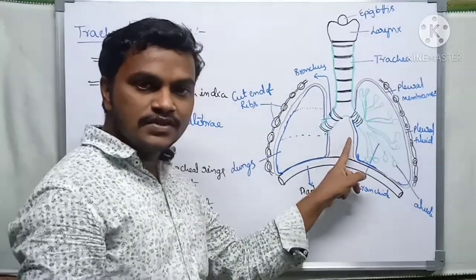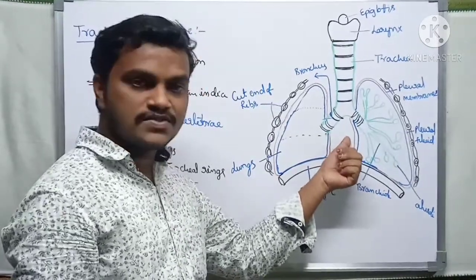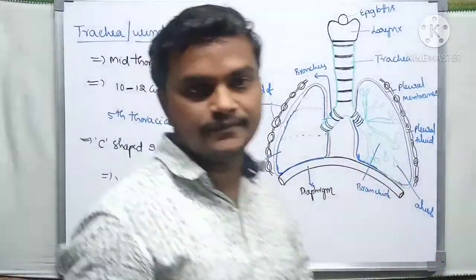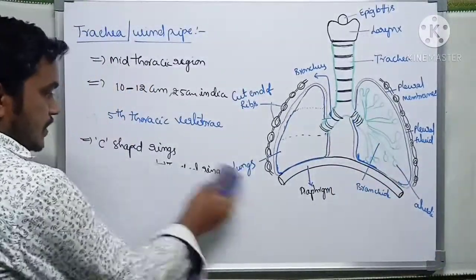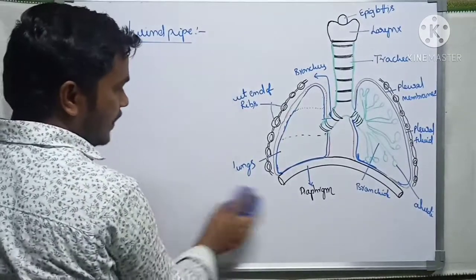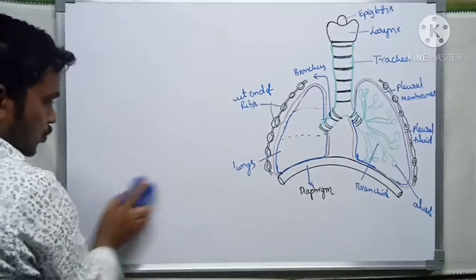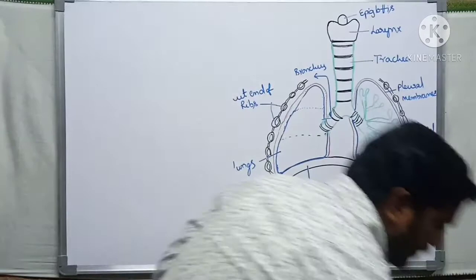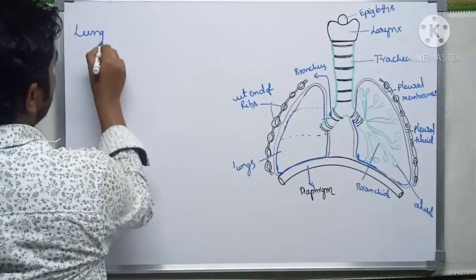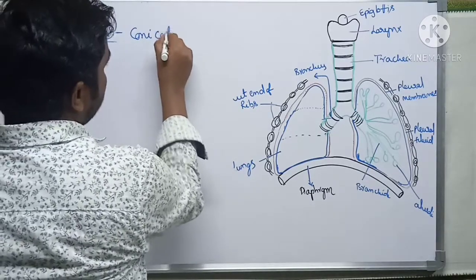The left lung has a notch called the cardiac notch, where the heart is situated. That is why the left lung is smaller in size. The shape of the lungs is conical. The lungs appear pink in color due to the richly supplied pulmonary capillaries.